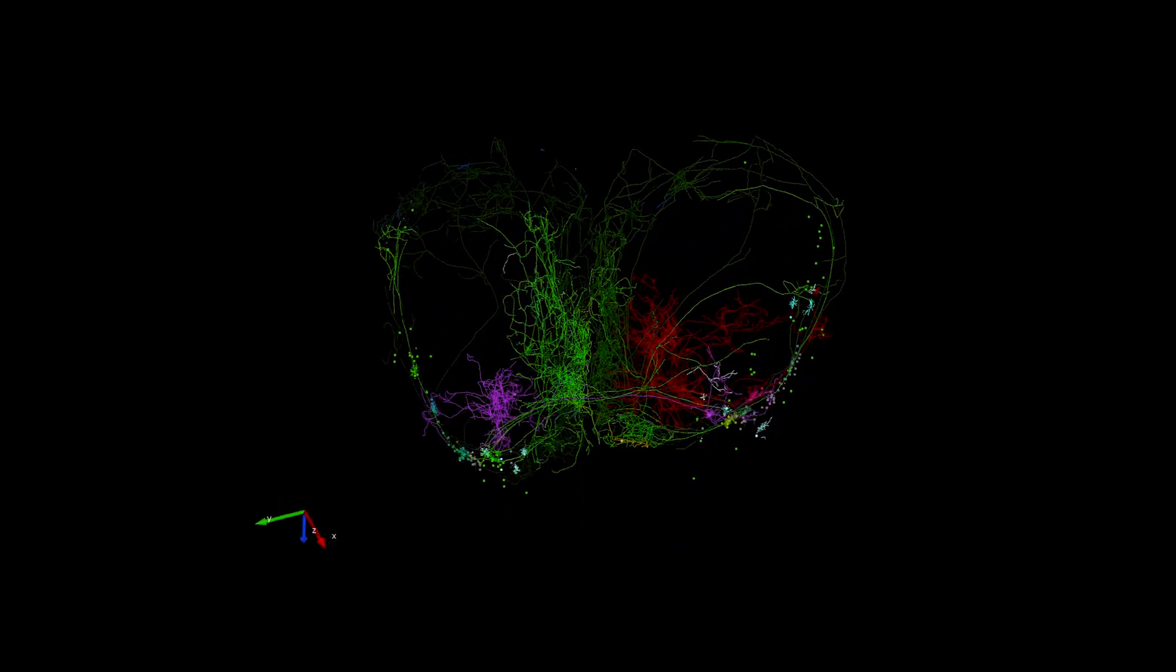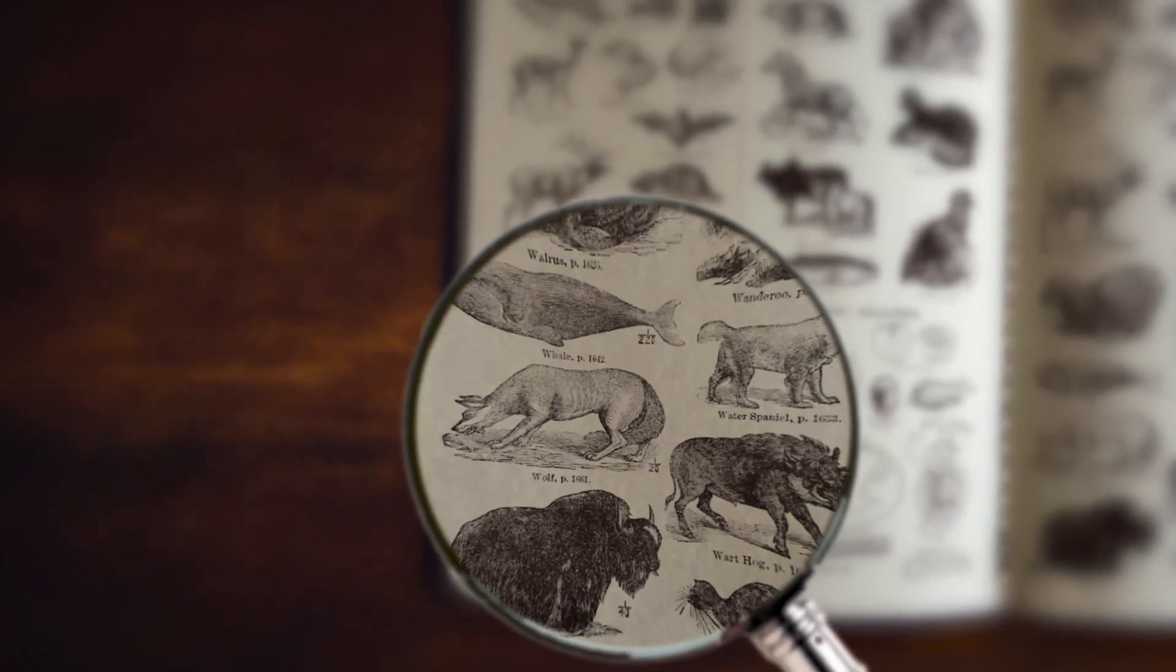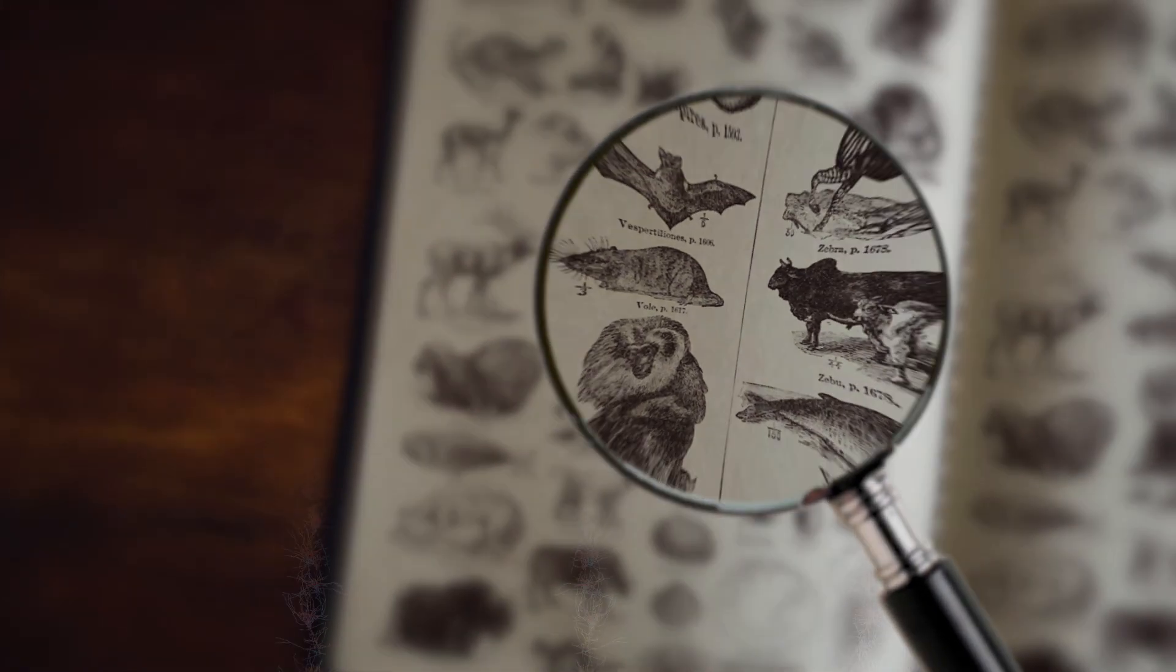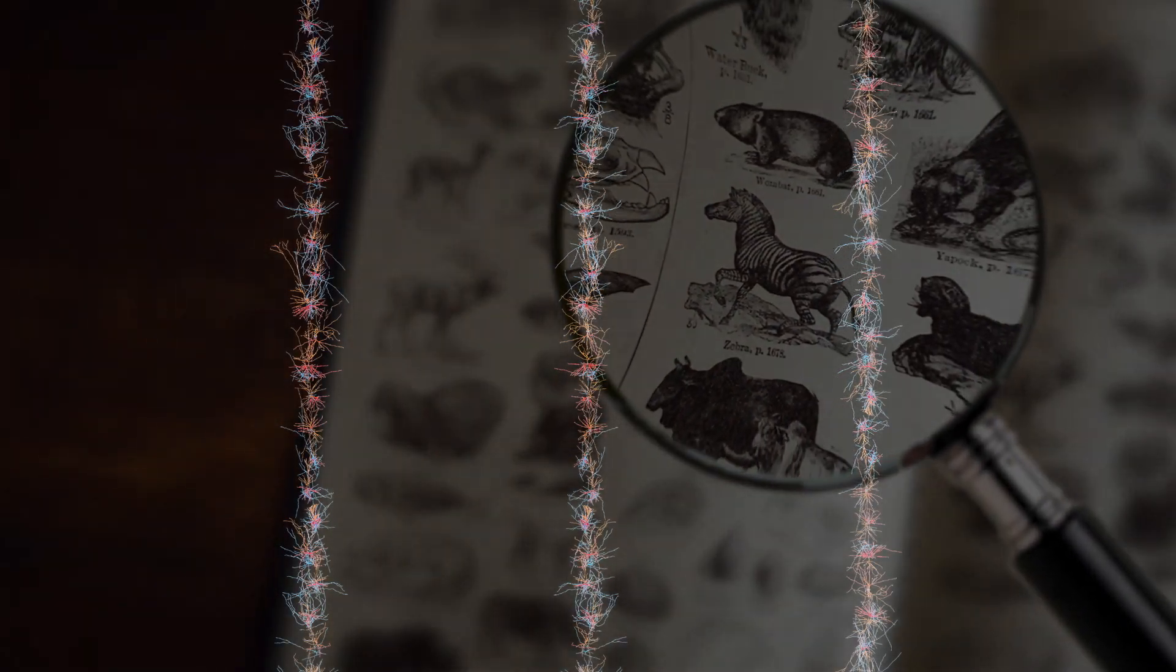The choice of primary motor cortex was based on several criteria. All mammals have a primary motor cortex responsible for voluntary motor control. And by picking that region, we were really comparing apples to apples across species.